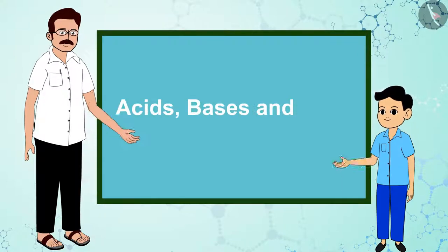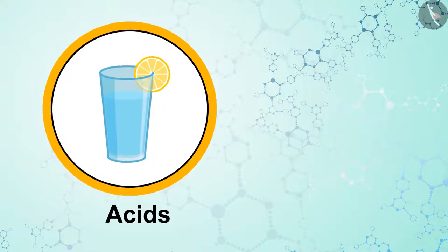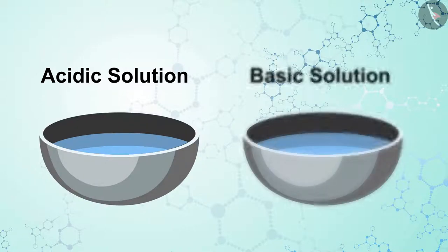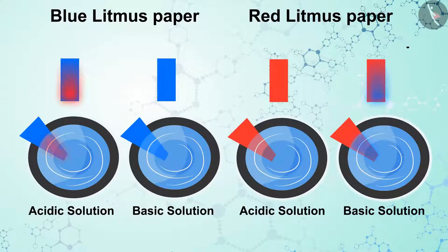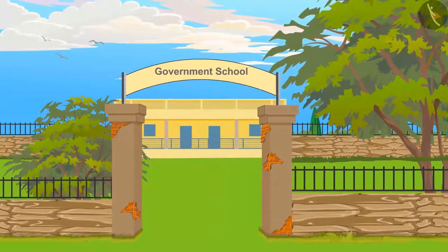Acids, bases and salts part 3. Hello children. In the previous video you had learned how to differentiate between acids and bases. As both acids and bases are generally colorless, indicators play an important role in differentiating the two. When acids and bases meet, what happens? Shall we go back to Raju? We might find answers from him, his friends, or his teacher.